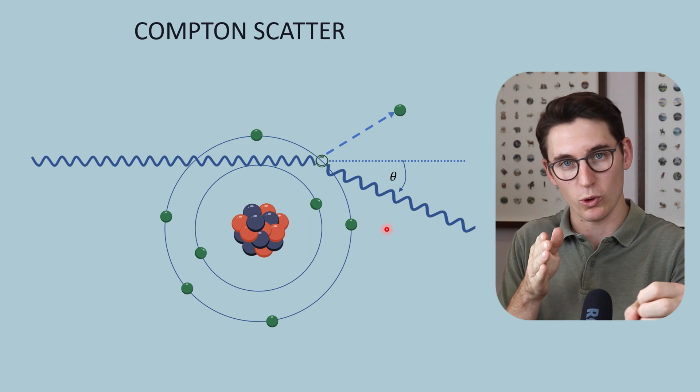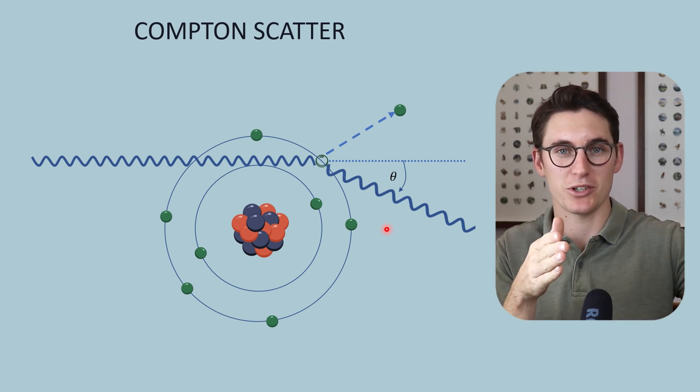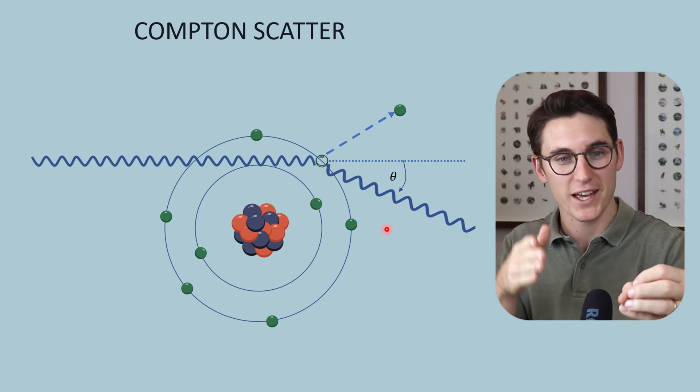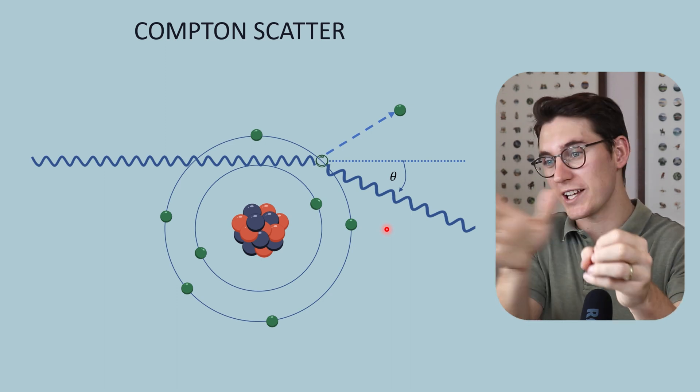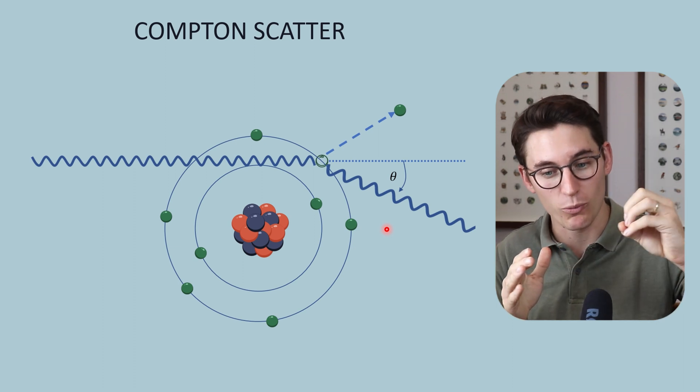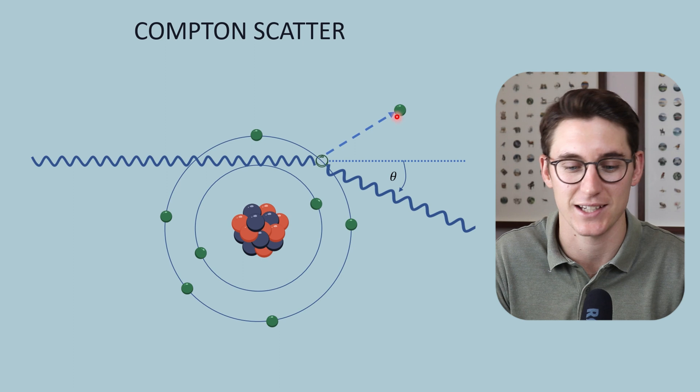You can think about it as a billiard ball. If we have a glancing blow, very little energy is transferred to the photoelectron. If we have a large collision with a high scatter angle, we lose a lot of energy in that collision and most is released in the form of the photoelectron's kinetic energy.